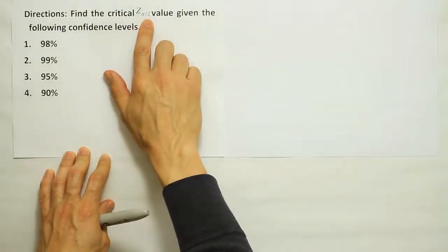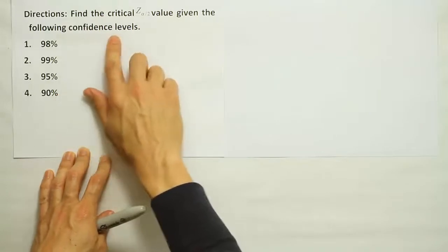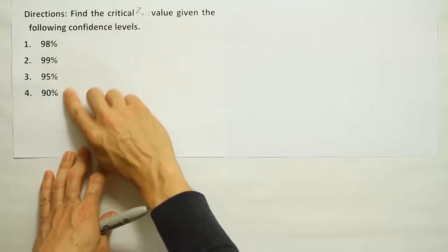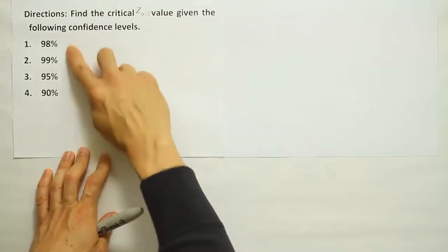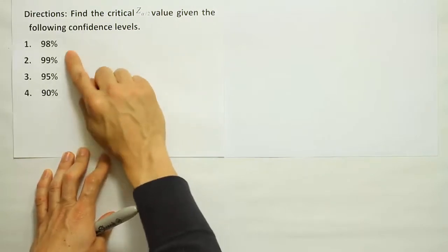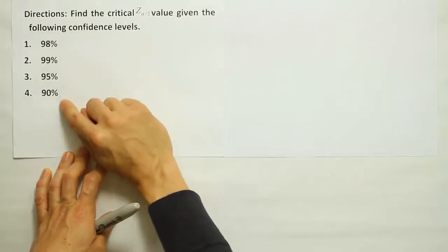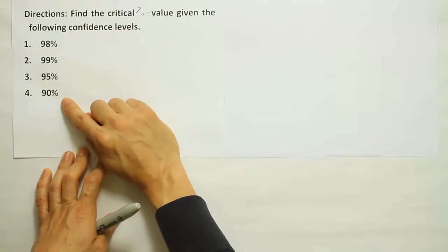Find the critical Z-alpha divided by 2 value given the following confidence levels: 98%, 99%, 95%, and 90%. These four confidence levels are the most commonly used confidence levels in confidence interval problems, so we're going to see these time and time again.